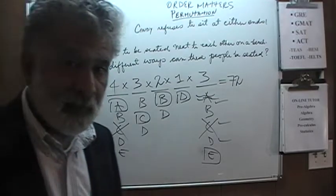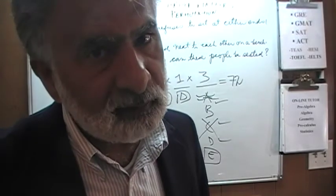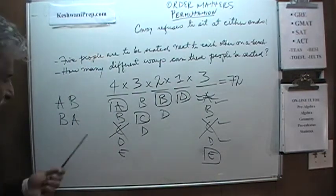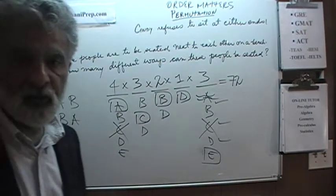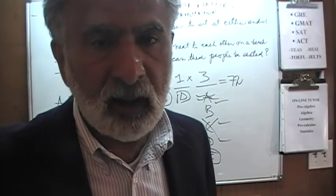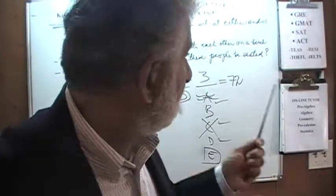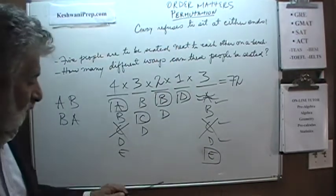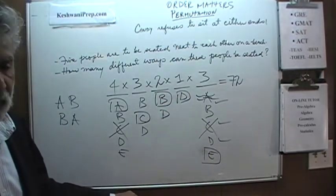If you were dealing with combination, in combination order does not matter. In combination we cannot count these as two different things. This is only one thing because in combination we are just combining them. It doesn't matter how we combine them. Order does not matter in combination. Here this problem deals with the notion of permutation where order very much matters.